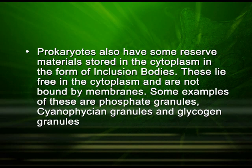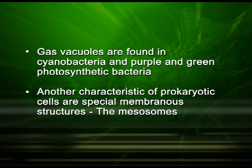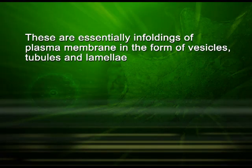Prokaryotes also have some reserve materials stored in the cytoplasm in the form of inclusion bodies. These lie free in the cytoplasm and are not bound by membranes. Examples include phosphate granules, cyanophysin granules and glycogen granules. Gas vacuoles are found in cyanobacteria and purple and green photosynthetic bacteria, but these are not bound by a membrane. Another characteristic of prokaryotic cells are special membranous structures called mesosomes, which are essentially infoldings of the plasma membrane in the form of vesicles, tubules and lamellae.